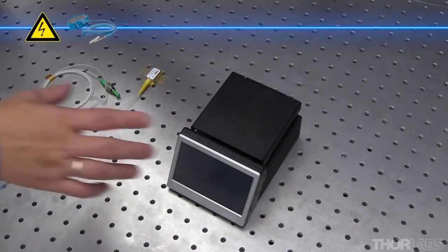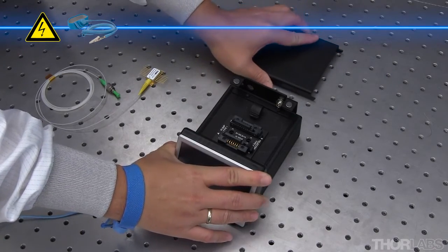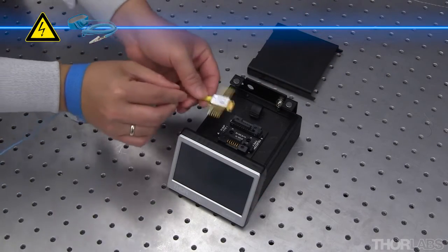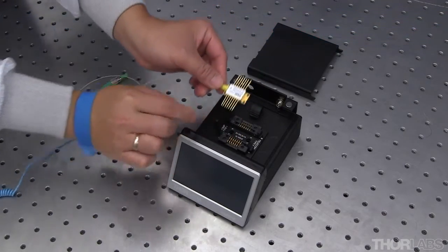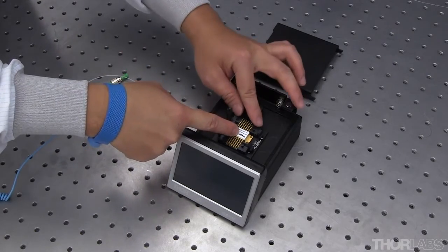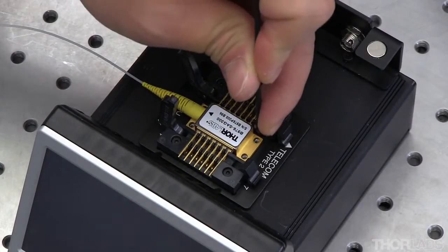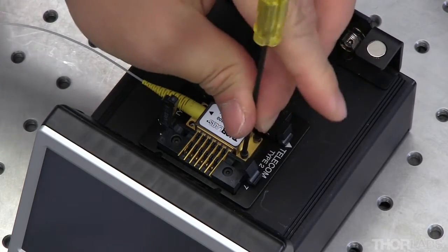Next, we want to install the laser diode into the integrated current and TEC controller. ESD protection should be used at this point. The 14-pin butterfly package should fit easily into the controller's socket. Ensure that the pigtail is oriented in the type 1 direction. Secure the diode to the controller with the included screws and socket clamps.